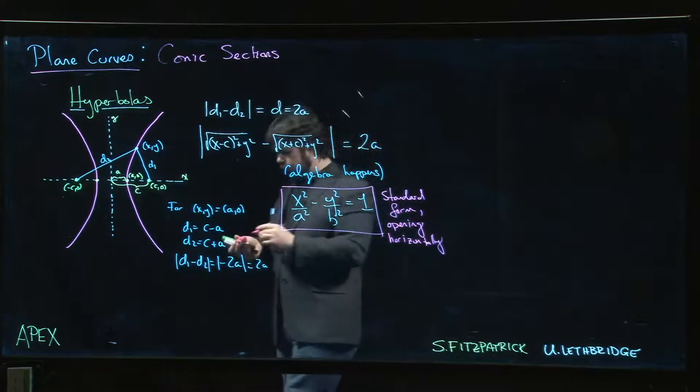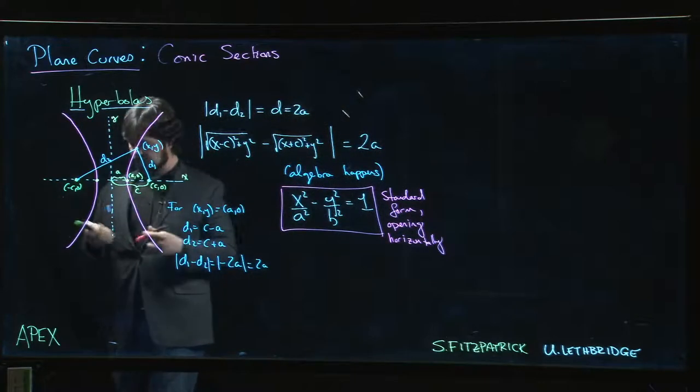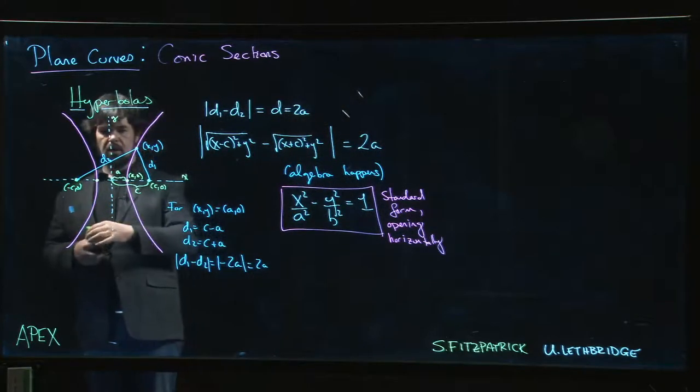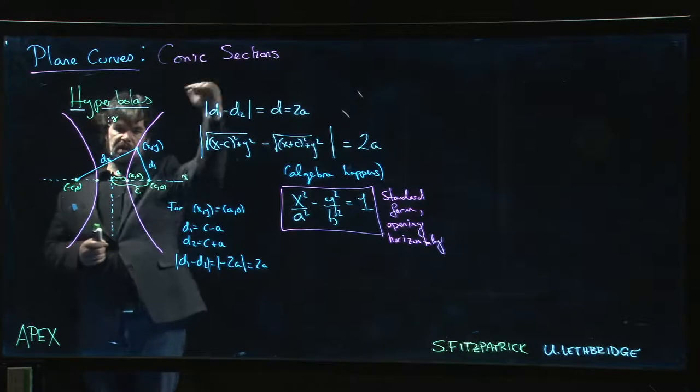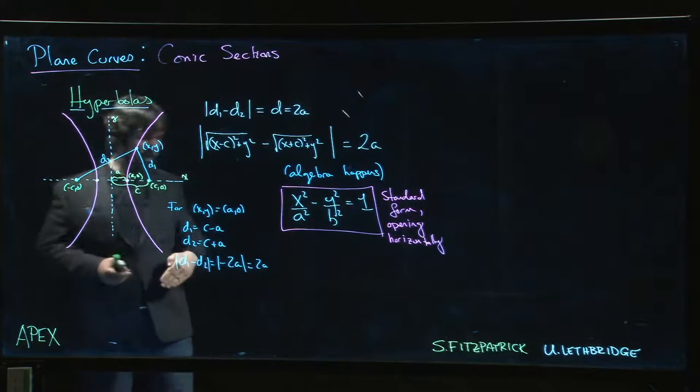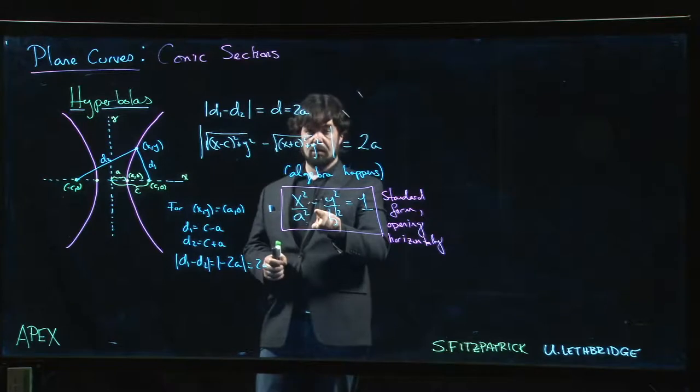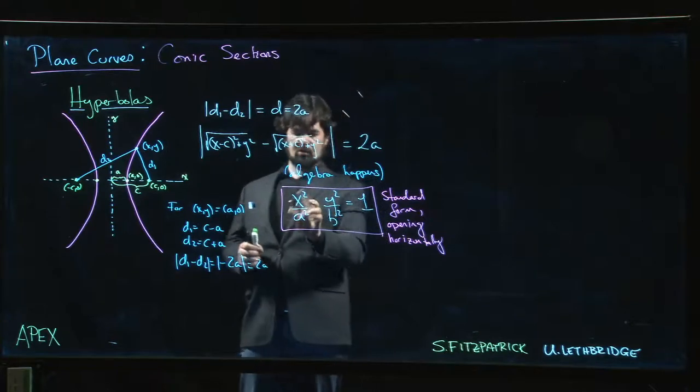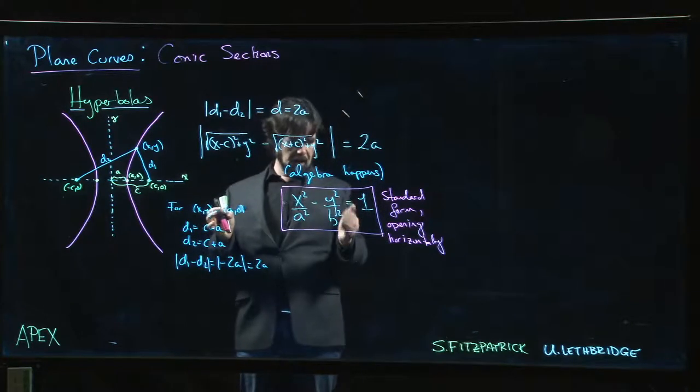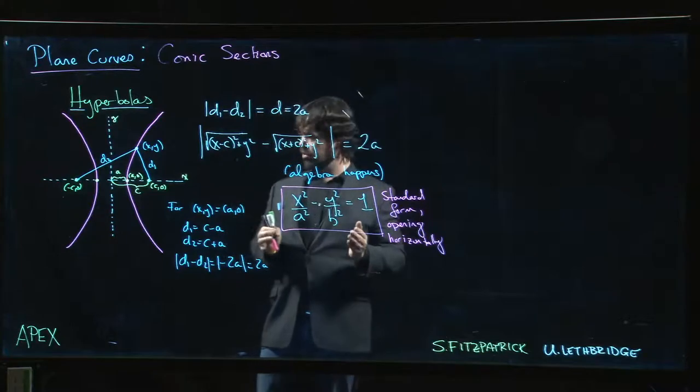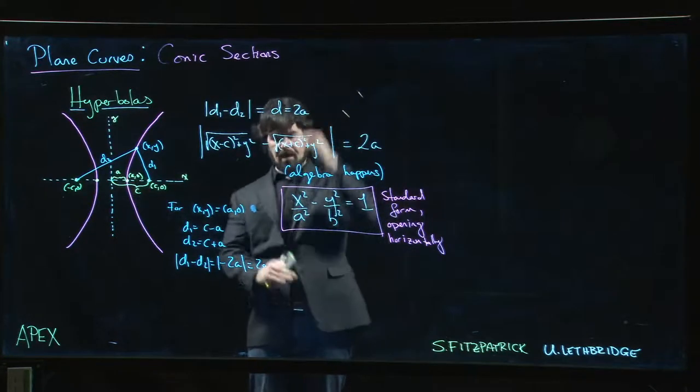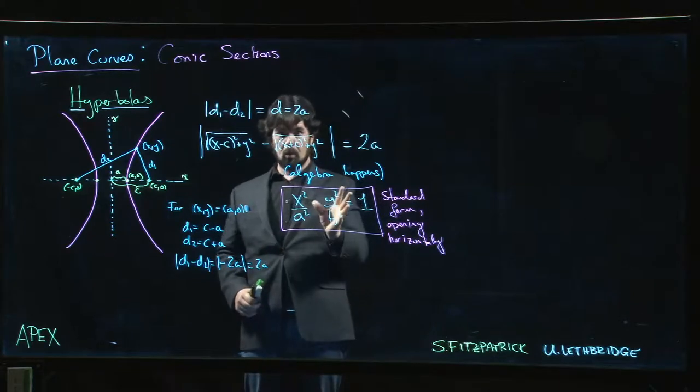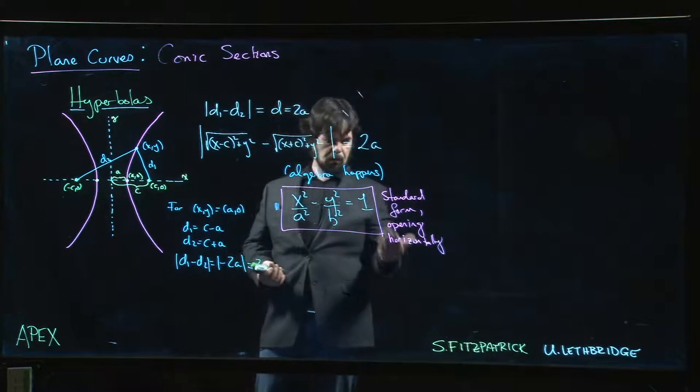You can also go through the same procedure and do a hyperbola where the foci are on the vertical axis, so the vertices are also on the vertical axis. Then the minus sign will be on the x, the plus sign will be on the y. It just comes down to whether the hyperbola is opening left-right or up-down, which determines which coordinate gets the minus sign on it.